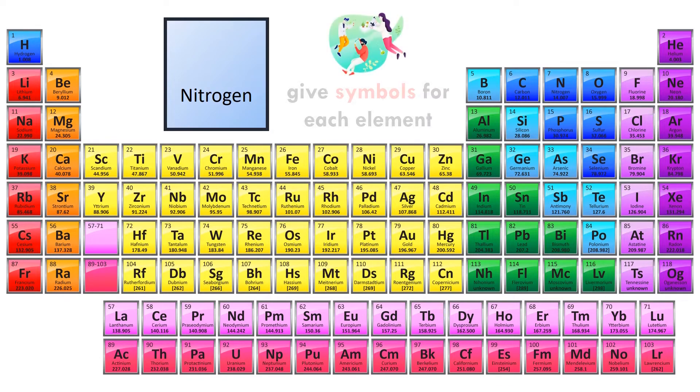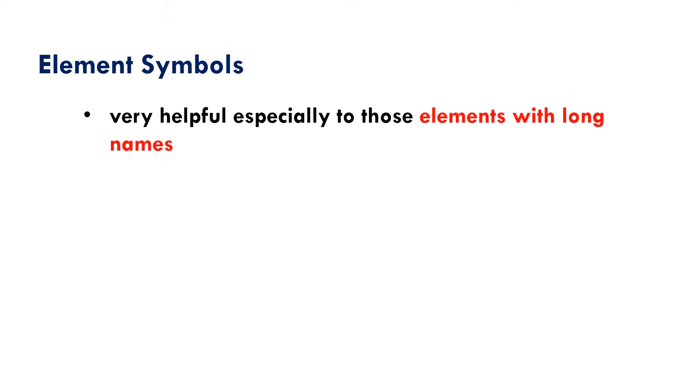Scientists agreed to give symbols for each element. In this example, the symbol of nitrogen is capital letter N. Element symbols are very helpful, especially for those elements with long names. Instead of writing the full names, a one-letter or two-letter symbol may be used.